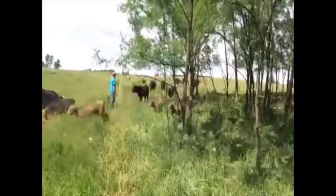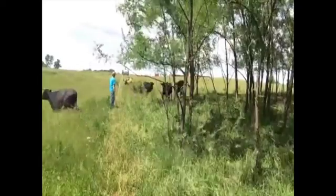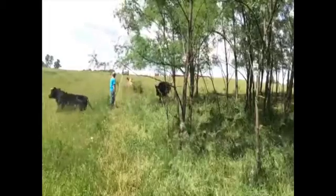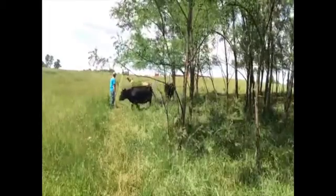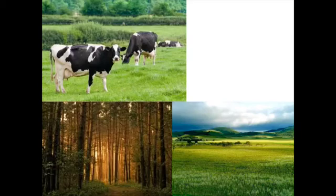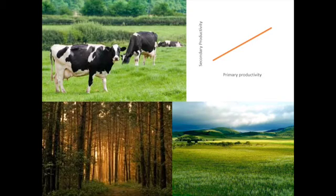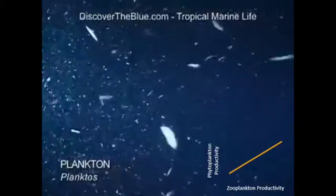Sam McNaughton from Syracuse University compiled data from 69 studies reporting both net primary productivity and secondary productivity for terrestrial ecosystems. He found that the secondary productivity of herbivores increased with primary productivity, and that forests exhibit less consumption per unit of primary productivity than grasslands. Michael Berlinski and K.H. Mann of Dalhousie University examined the relationship between phytoplankton and zooplankton productivity in 43 lakes and 12 reservoirs, finding a significant positive relationship between phytoplankton productivity and the productivity of both herbivorous and carnivorous zooplankton.